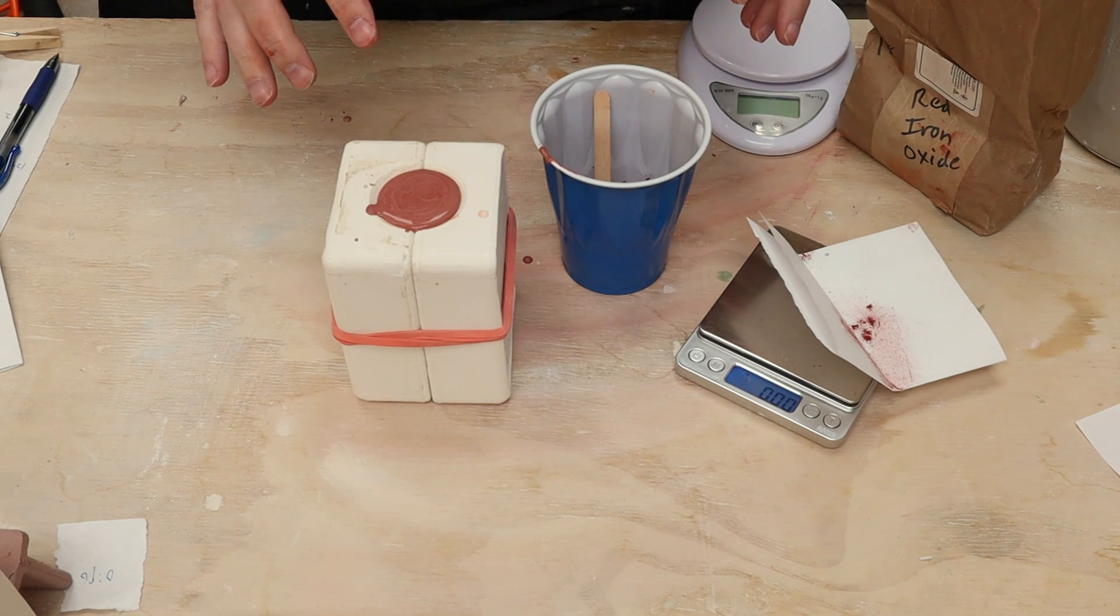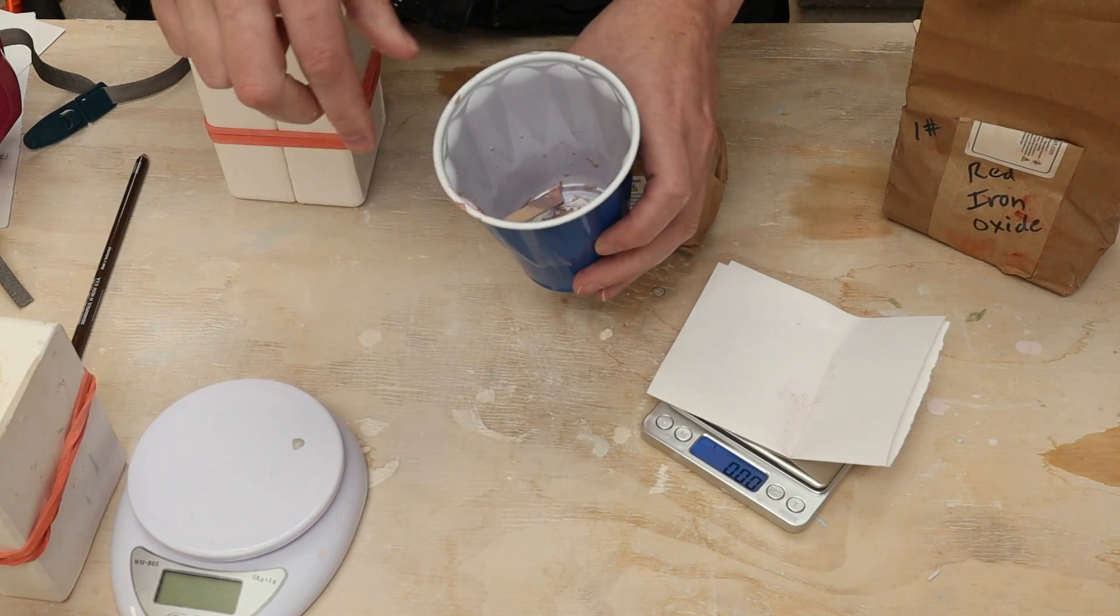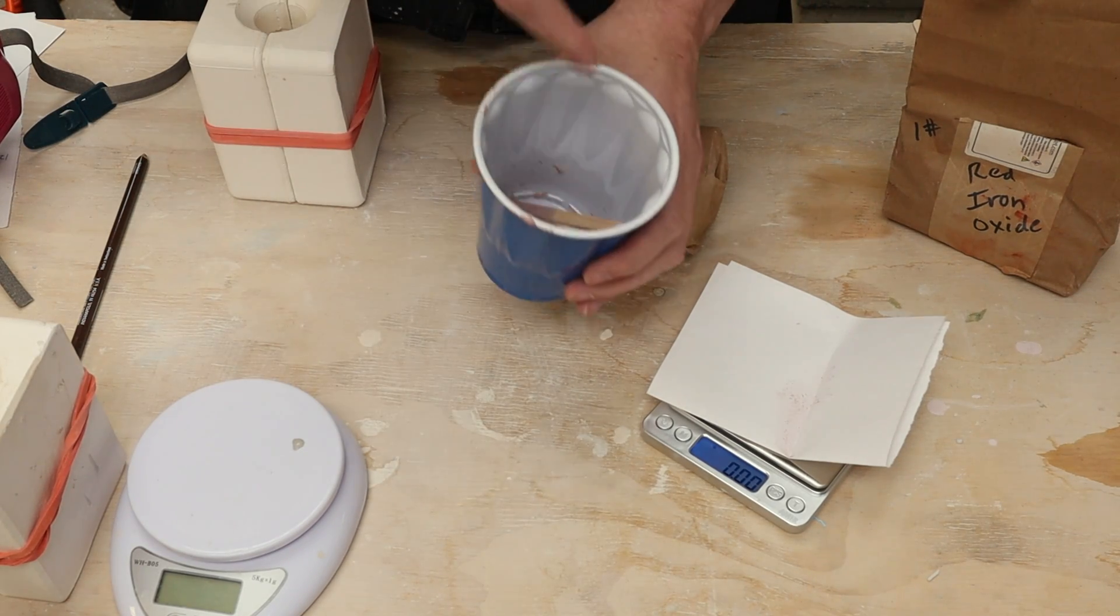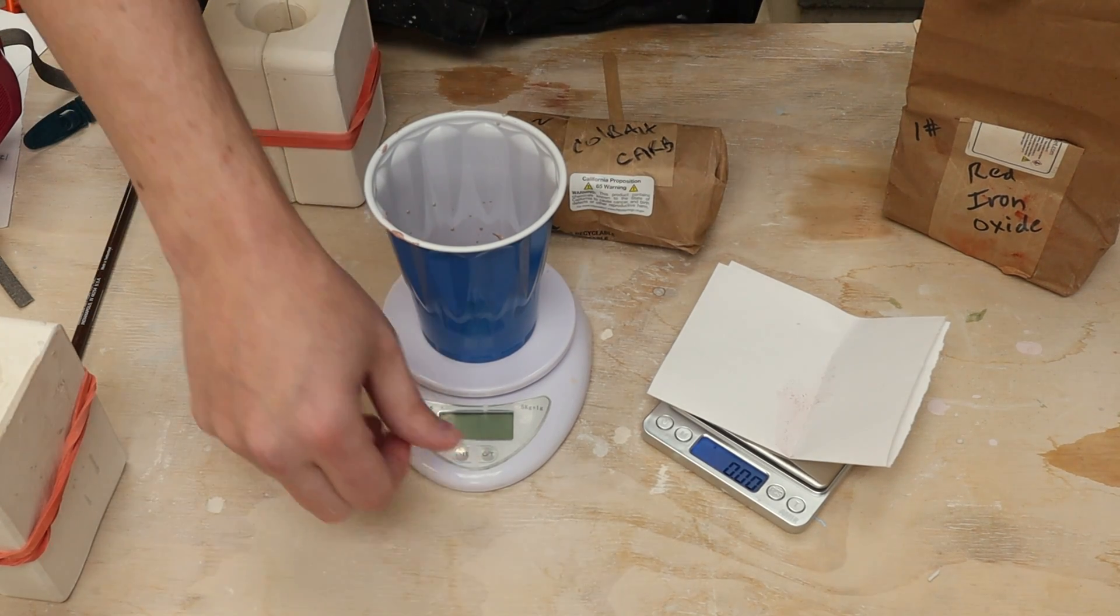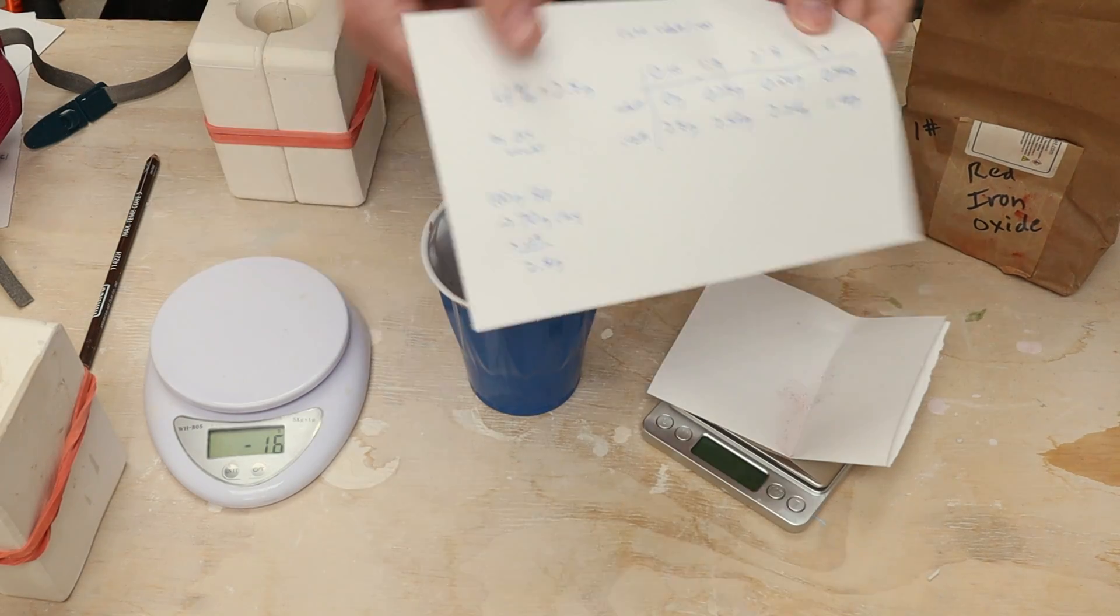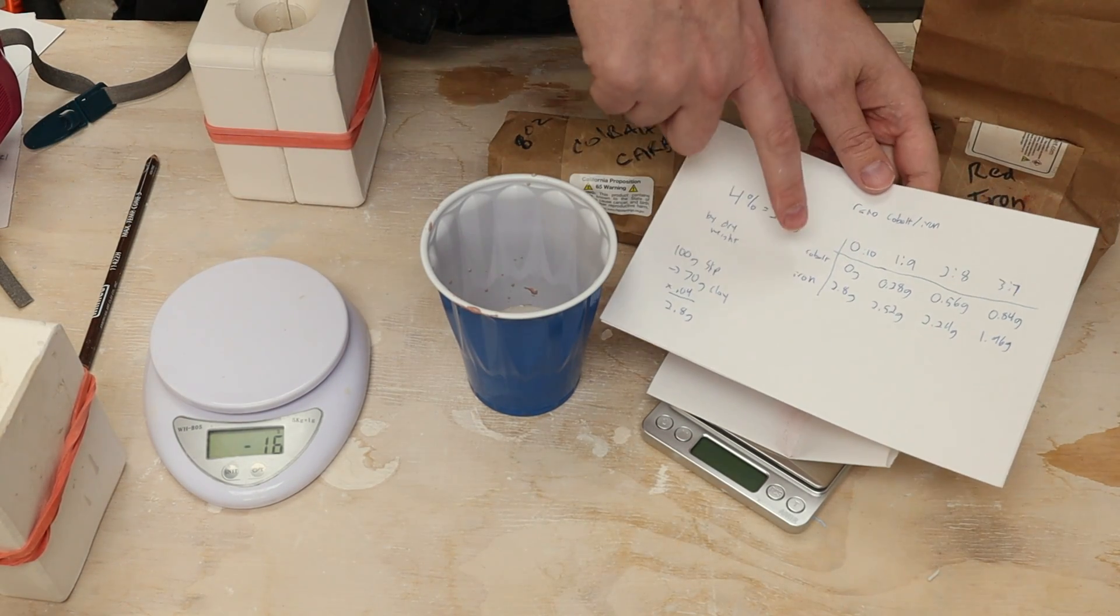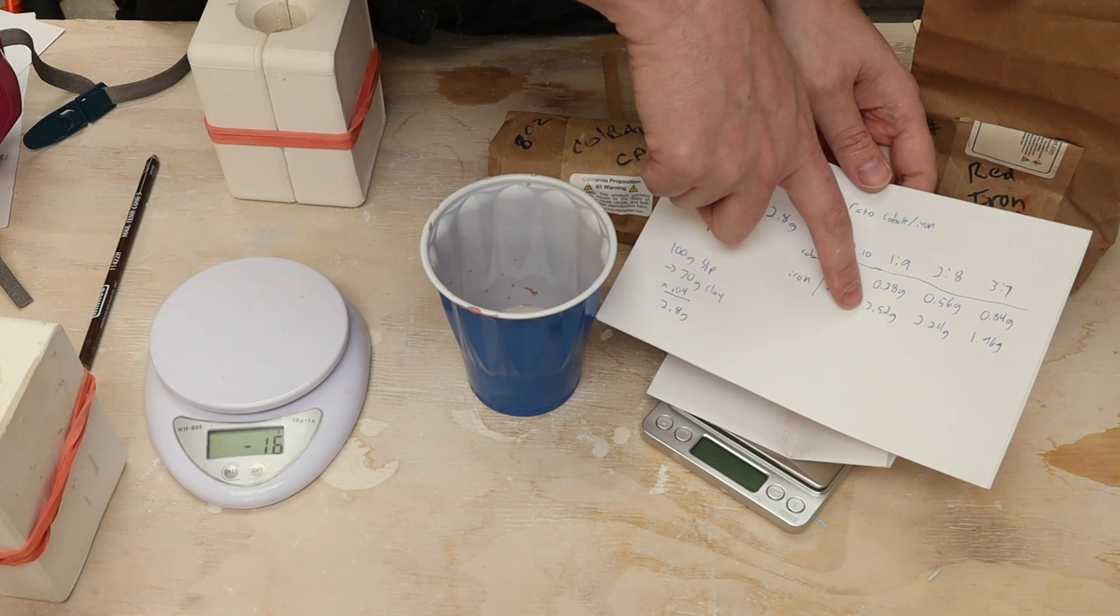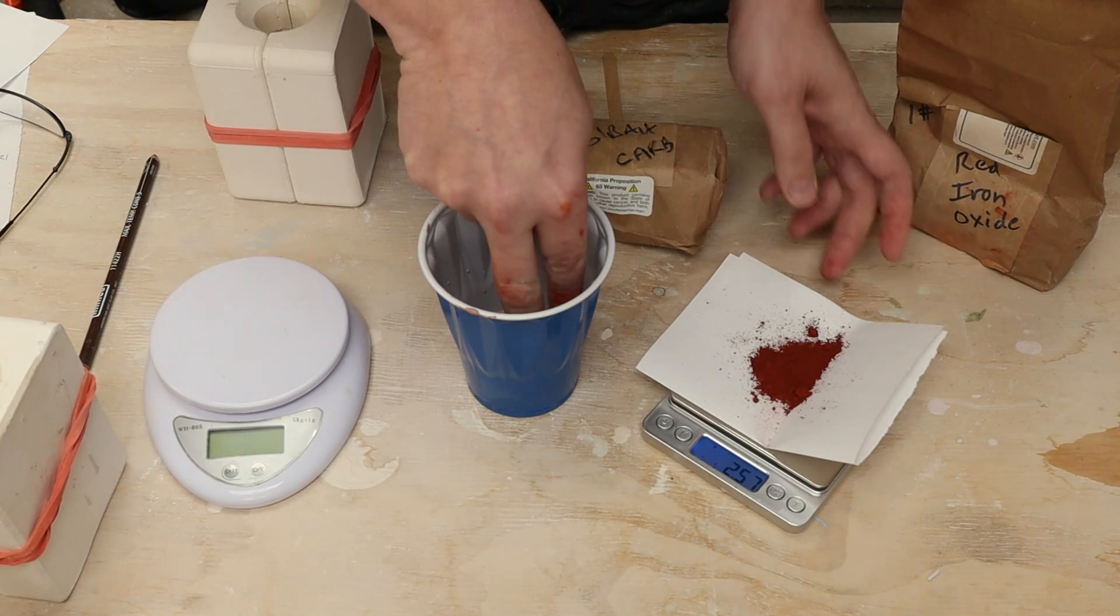Let me grab the cobalt and we will do the next one. I'm not going to bother rinsing this out since I'm just going to be continuing to increase the ratios. I want another 100 grams and then I will do the next ratio. Back to this cheat sheet, for the iron oxide I need 2.52 grams. 2.57, we'll call that close enough.